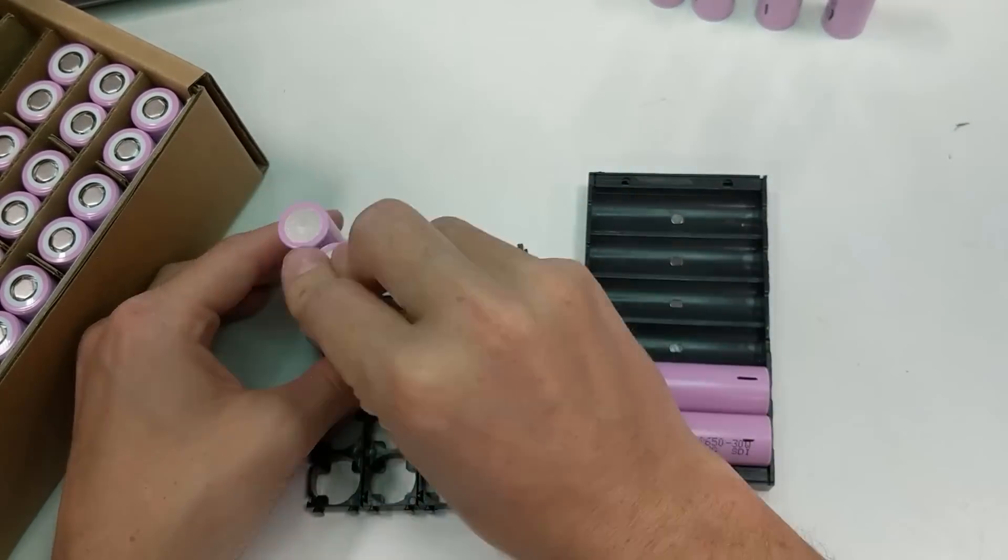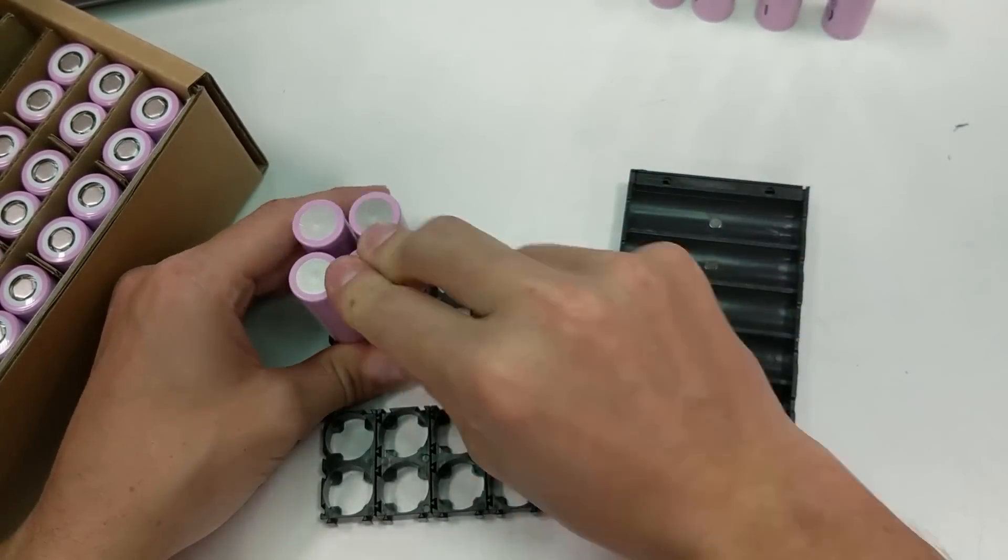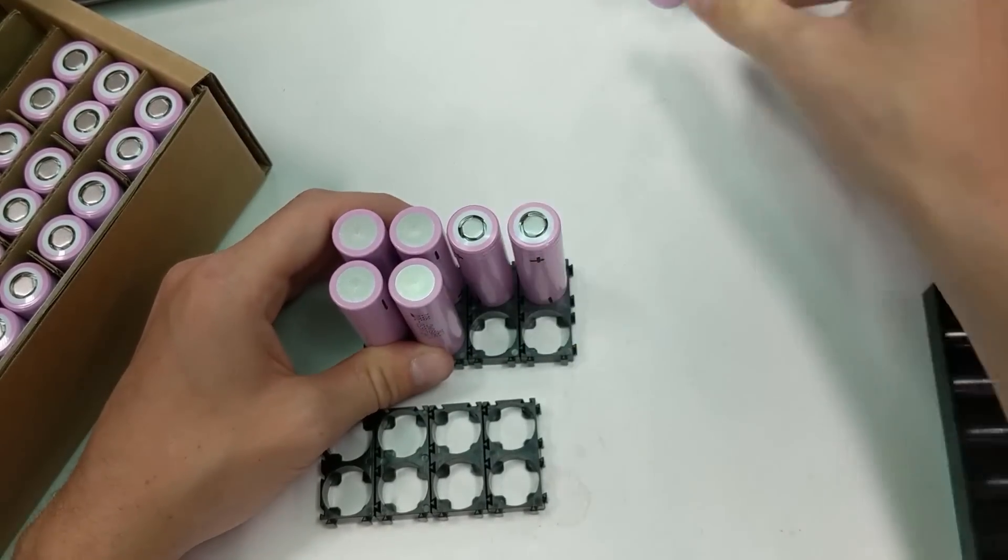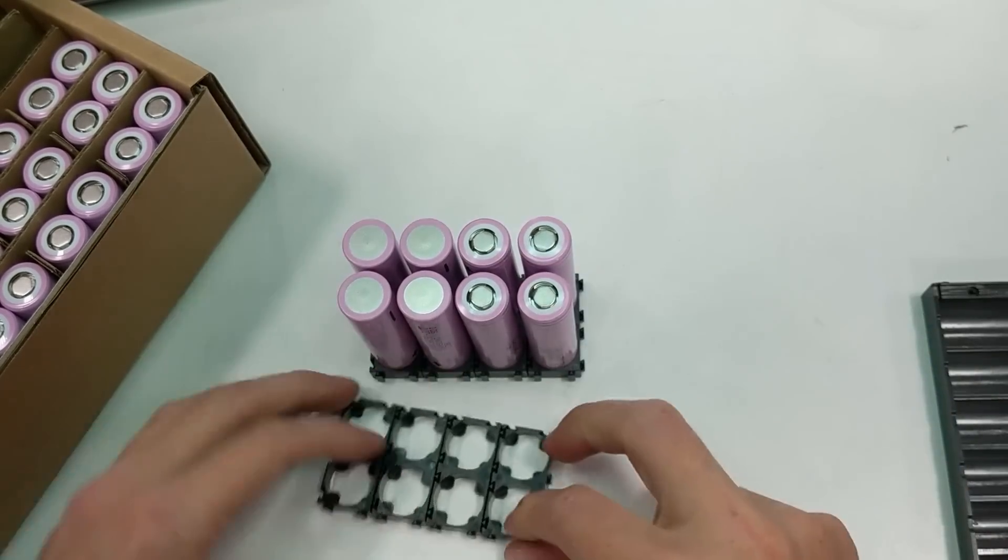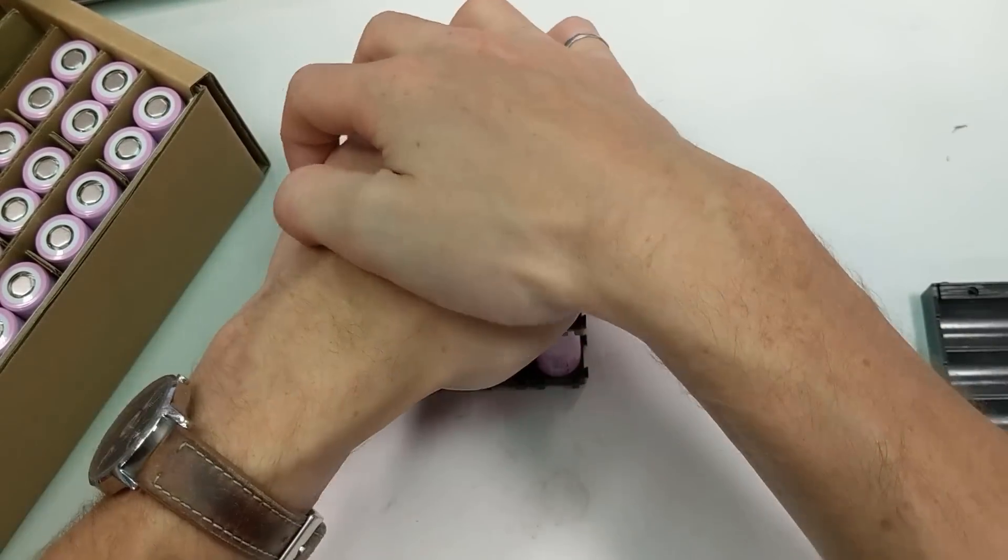Next, load the 18650 cells into the plastic holders. You'll notice 4 are facing up and 4 are facing down. This is due to the battery design. I have 4 cells in parallel groups that are joined together in series.